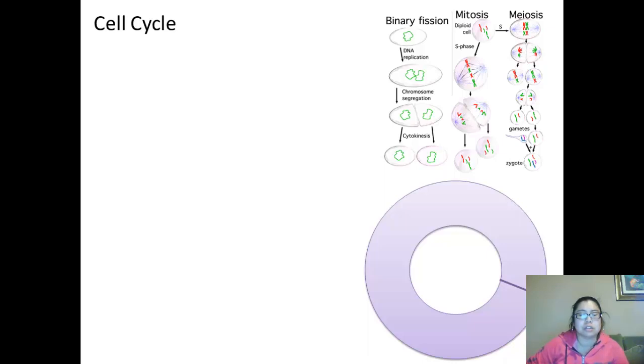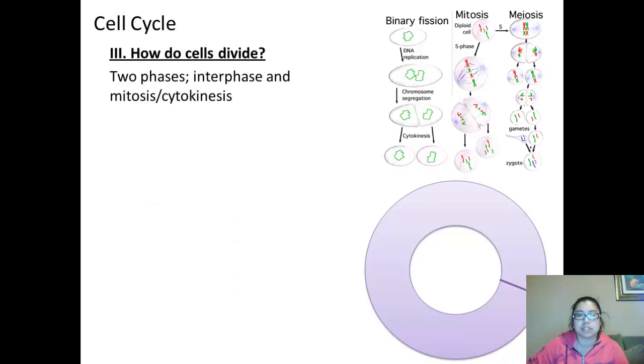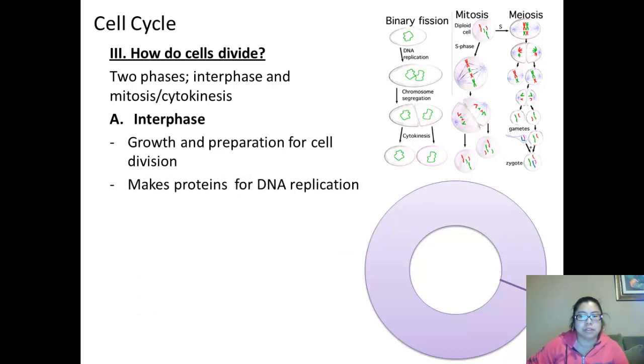How do cells divide? There are two main phases: interphase and mitosis slash cytokinesis. In interphase, the growth and preparation for cell division. They make proteins for DNA replication, and there are three stages.